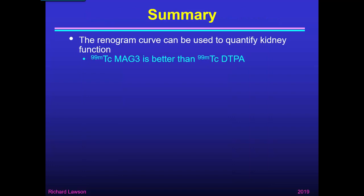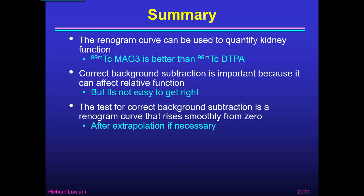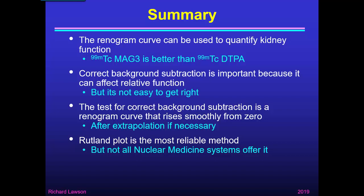In summary of this whole talk: the renogram curve can be used to quantify kidney function. If you're using technetium-99m MAG3, that is better than technetium DTPA because there is more MAG3 in the kidney and less in the blood, making background subtraction much easier. Correct background subtraction is important not only for cosmetic effects but because it can affect relative function — but it's not easy to get right. You have to allow for blood background as well as tissue background. The test for correct background subtraction is that the renogram curve should rise smoothly from zero after extrapolation. The Rutland plot is the most reliable method and is recommended by the guidelines, though not all nuclear medicine systems offer it.